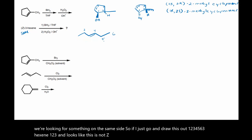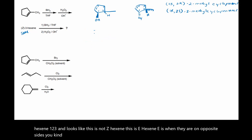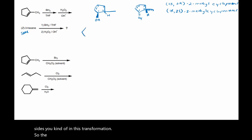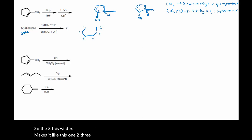So the Z — the same — makes it like this: 1, 2, 3, 4, 5, and 6. This is Z-3-hexene.